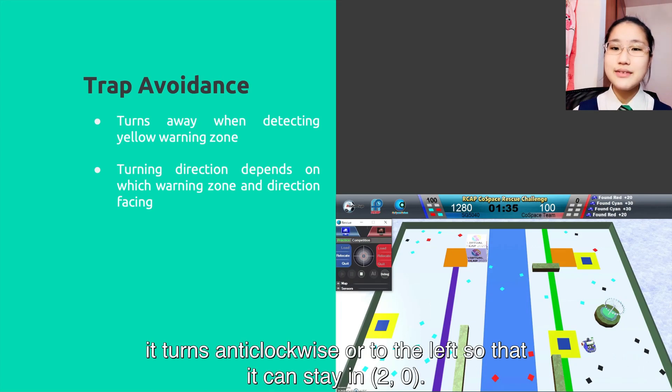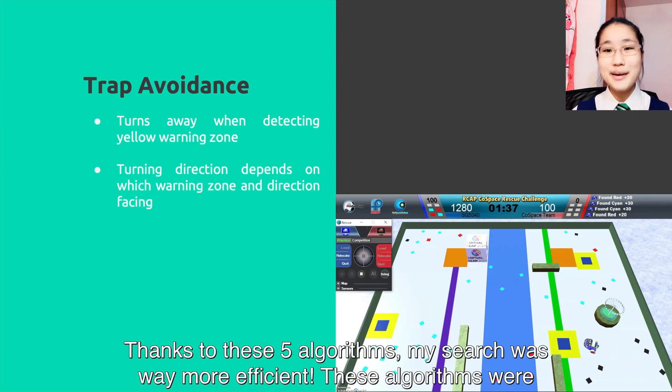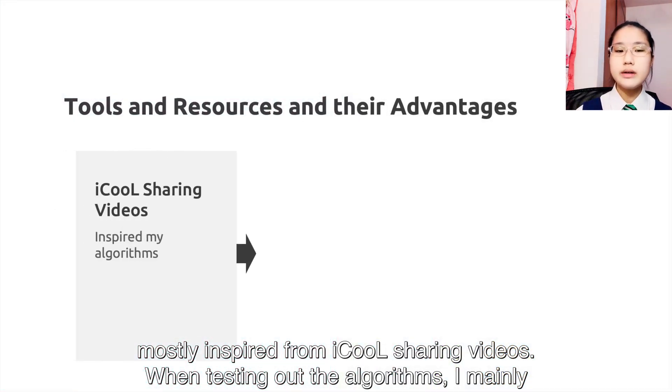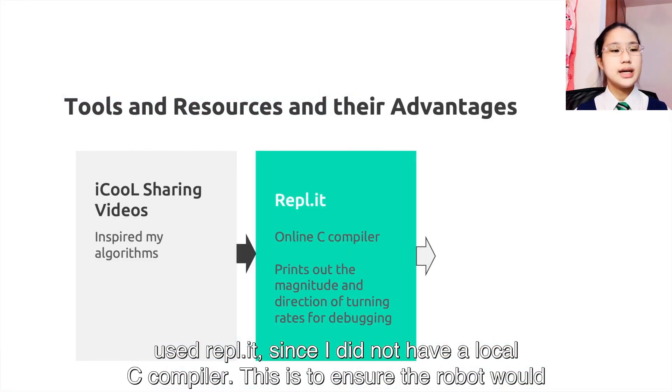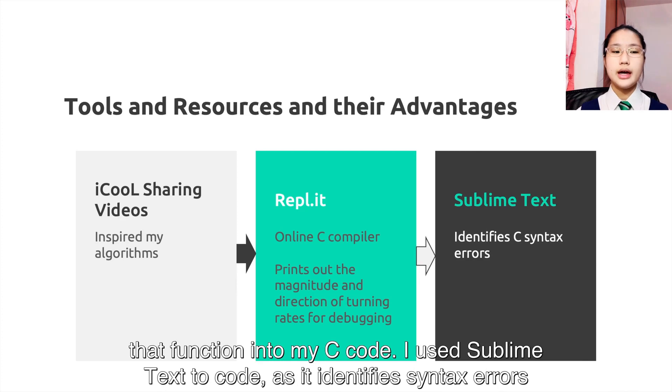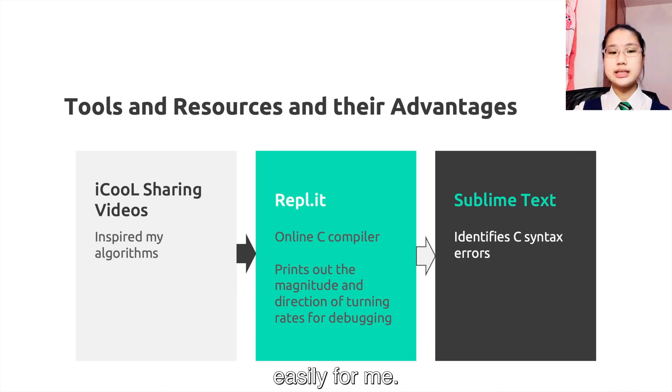Thanks to these five algorithms, my search was way more efficient. These algorithms were mostly inspired from the iCOOL sharing views. When testing out the algorithms, I mainly used Repl.it since I did not have a local C compiler. This is to ensure the robot would turn in the right direction and at a rate that makes sense. Afterwards, I feed the function into my C code. I use Sublime Text to code as it identifies syntax errors easily for me.